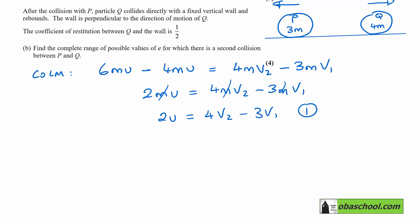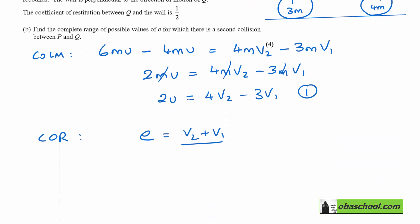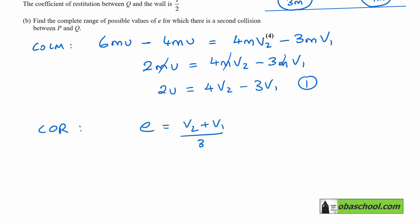Then we have the coefficient of restitution. E is equal to the velocity of separation, which will be V2 plus V1, because they're going in opposite directions, so therefore we add those velocities. And the speed of approach, or the velocity of approach, since they were going towards each other, add up 2u and u, and we get 3u. And that gives me 3eu is equal to V2 plus V1. And let's call that one equation 2.